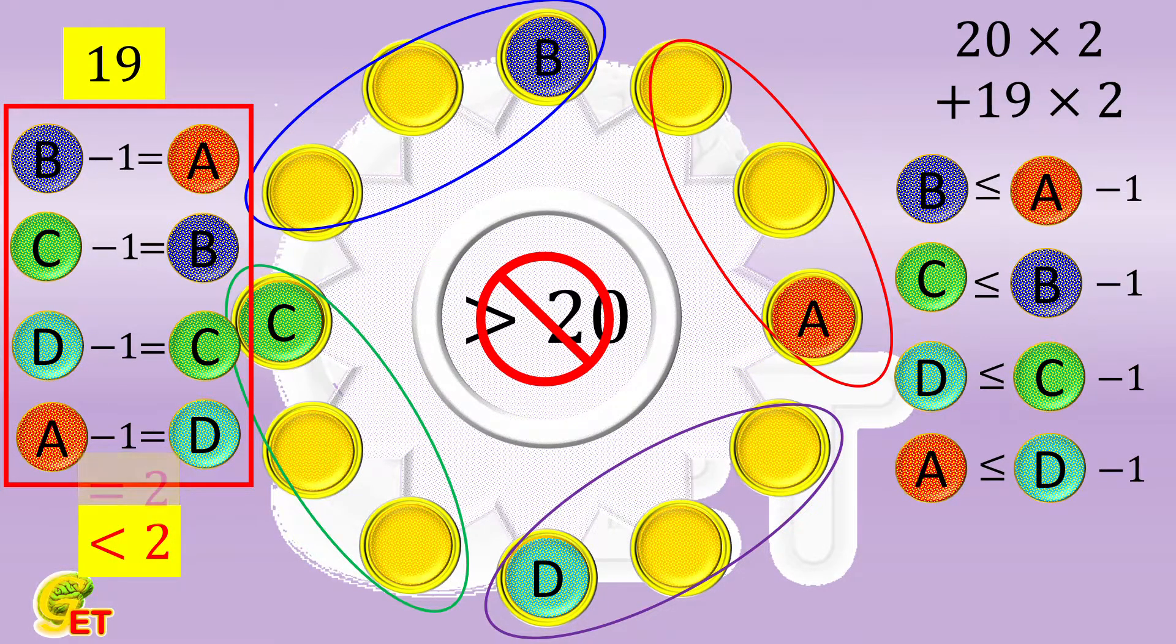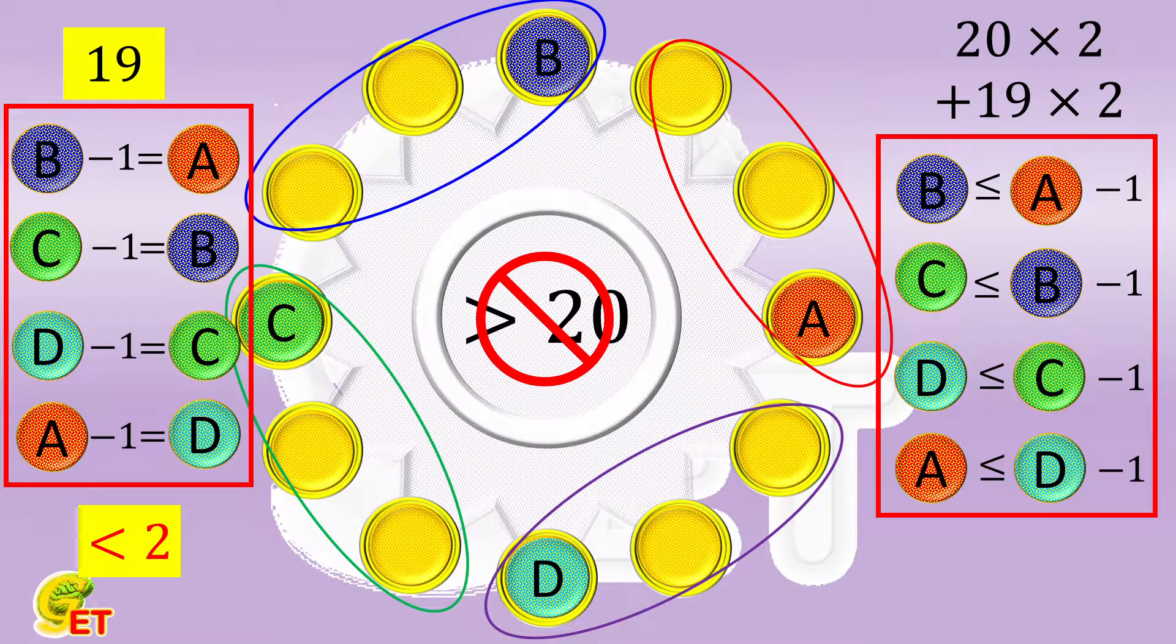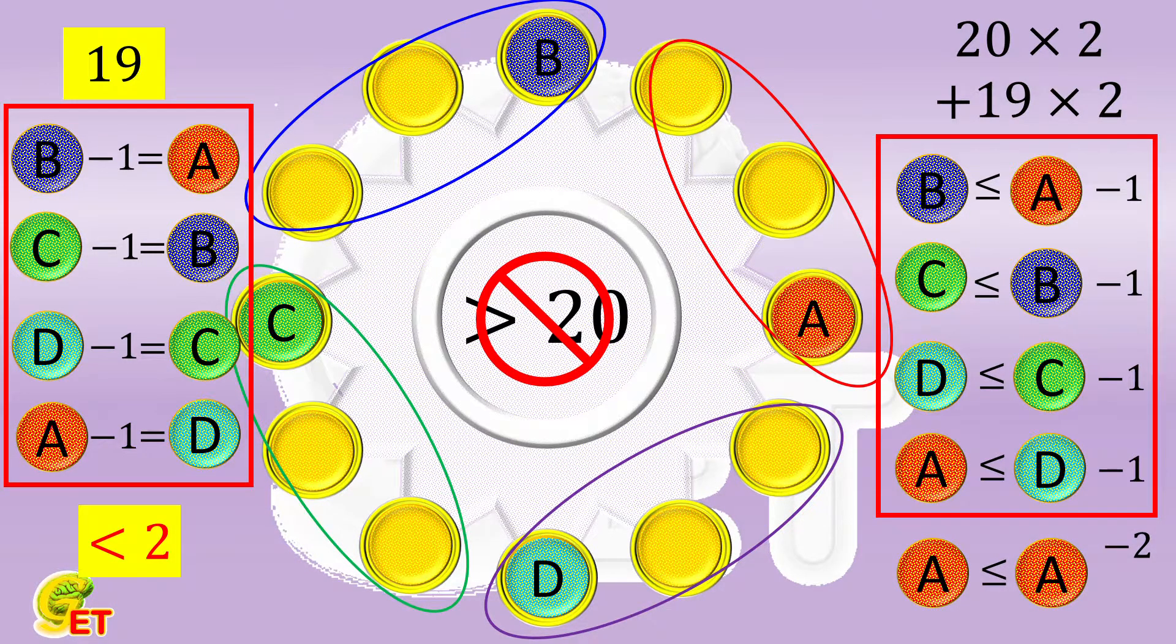If only one of them is true, then according to the four inequalities on the right side, we can get that a is not bigger than a minus 2. If only 0 are true, then a is not bigger than a minus 4. In other words, a has to be smaller than a itself in any case. That is impossible.